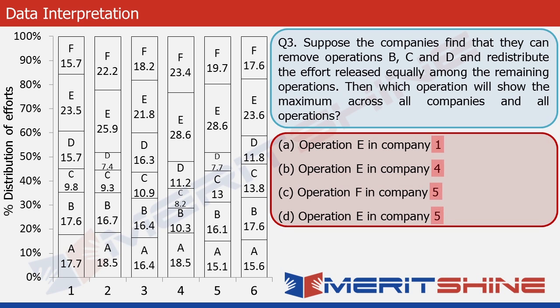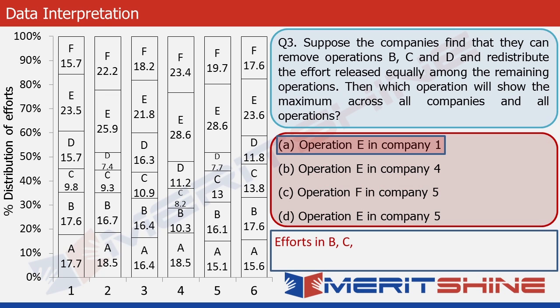Let's check option A first. Operation E in company 1. First let's calculate the total effort in BCD for company 1. It's the sum of 17.6, 9.8 and 15.7 which gives us 43.1. To find the allocation to company E out of this, we divide this number by 3 and we get 14.4. It means that 14.4 would be added to the original value of E which can be seen in the graph as 23.5. So the final value would be the sum of these two numbers and it becomes 37.9.